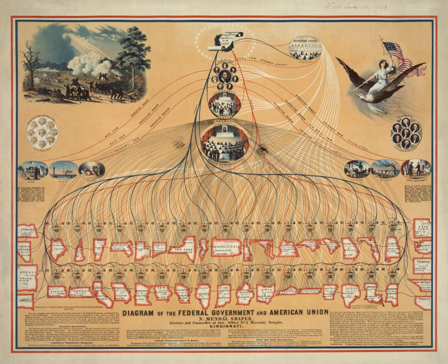The Federal Government of the United States is the National Government of the United States, a federal republic in North America, composed of 50 states, a federal district, five major self-governing territories, and several island possessions.